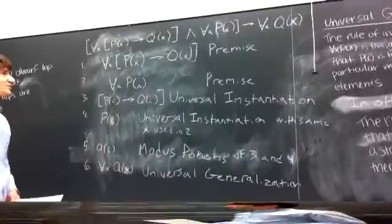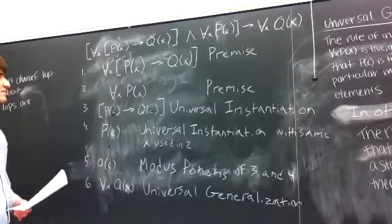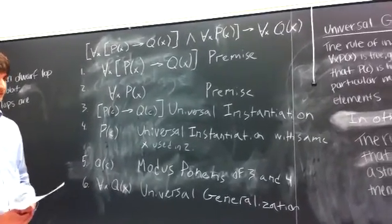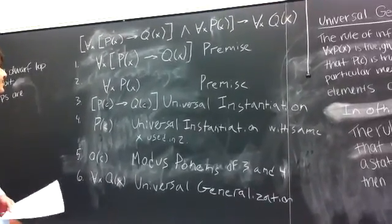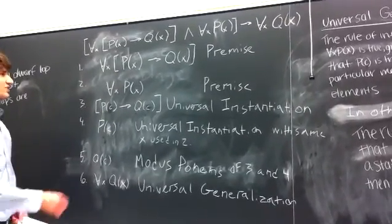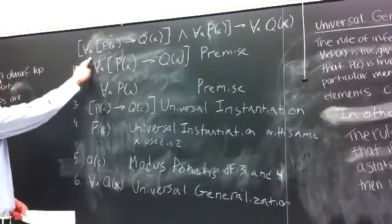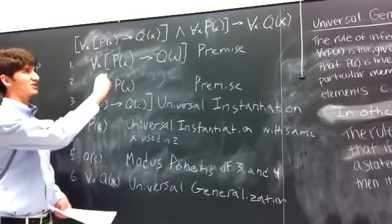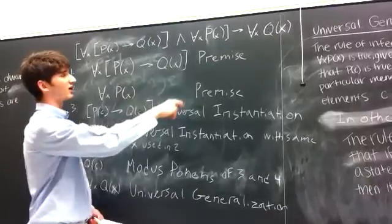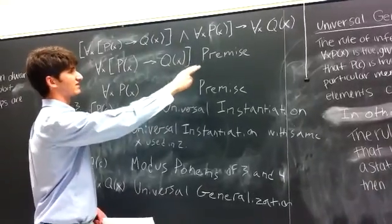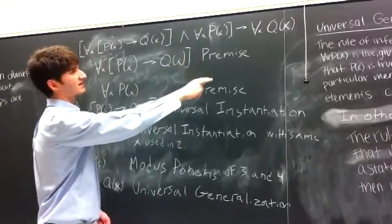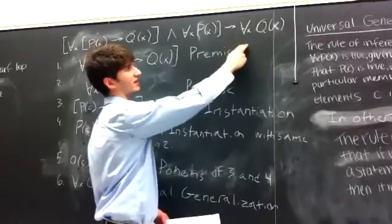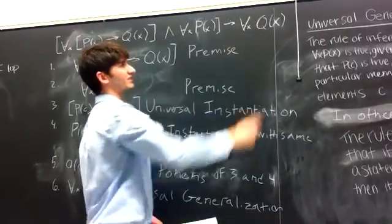Now let's provide a discrete mathematical proof to illustrate the concept of universal generalization. We're going to start off with the premise that for all x, p of x implies q of x, and for all x, p of x. Therefore, we can imply that for all x, q of x.